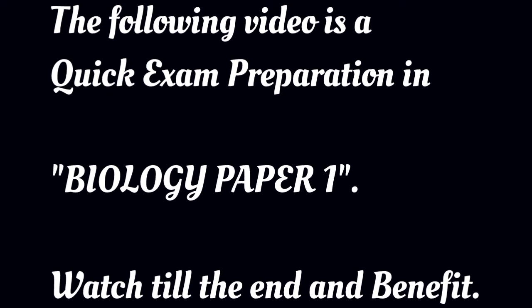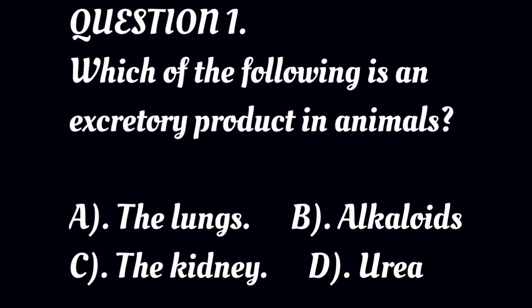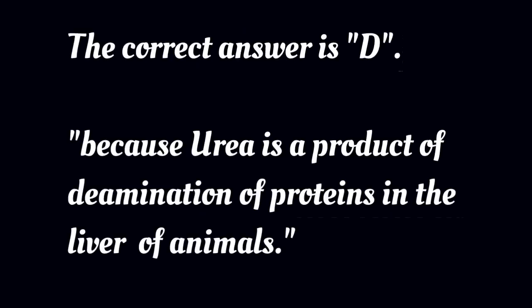The following video is a quick exam preparation in biology. Watch to the end and benefit. Question 1: Which of the following is an excretory product in animals? A: the lungs, B: alkaloids, C: the kidney, D: urea.